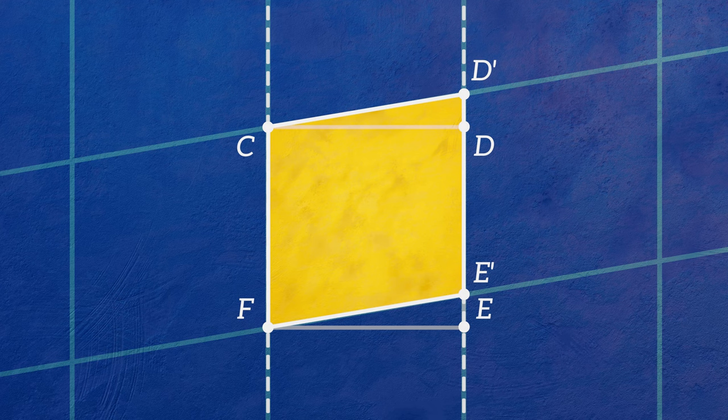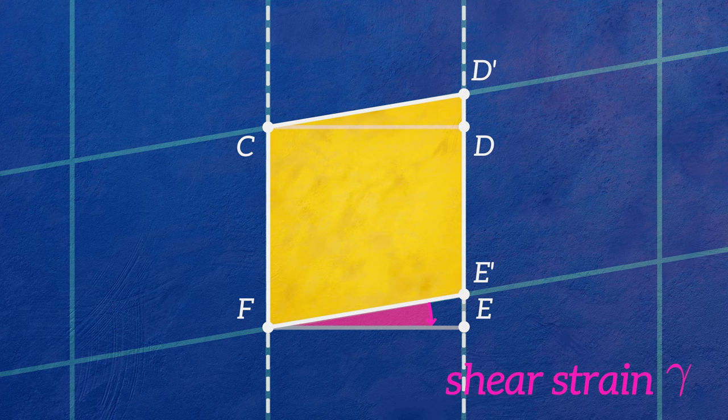After the torque is applied, the angles of the element are no longer 90 degree angles. This gives rise to a shear strain, which corresponds to the angle you can see here.